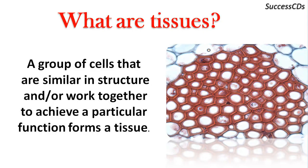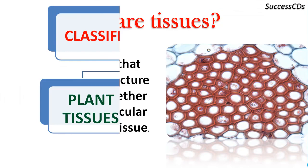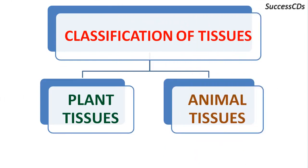Simple organisms are made of only one type of cell that performs all the functions. On the other hand, complex organisms have different cells performing different functions. Now let's see the classification of tissues. Tissues are broadly classified into plant tissues and animal tissues.